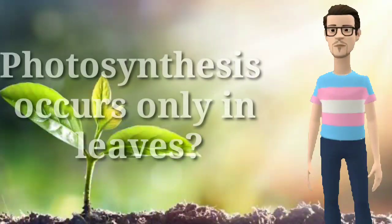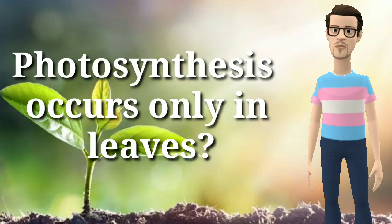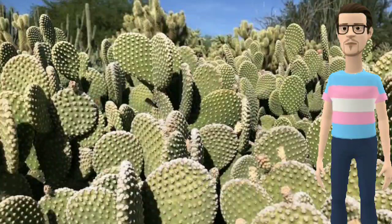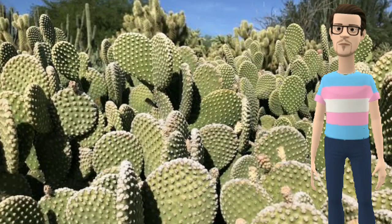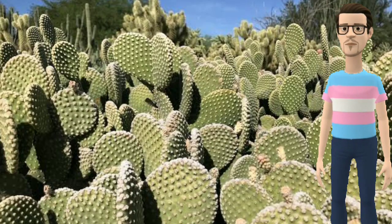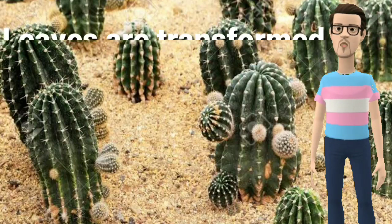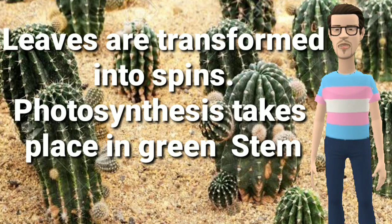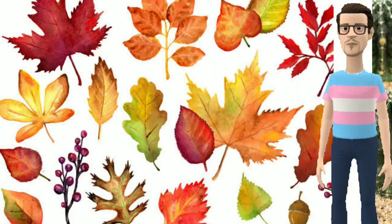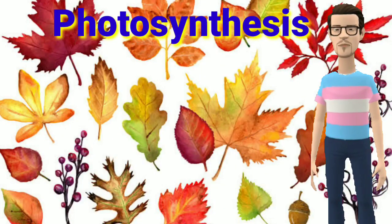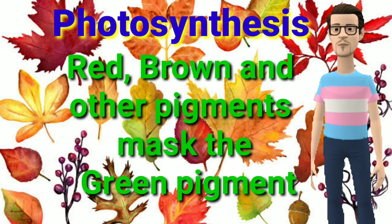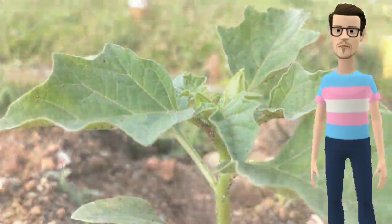Does photosynthesis take place only in leaves or in other parts of plants too? The answer is yes — even in green stems and green branches, photosynthesis takes place. Take the example of cactus, where the leaves are converted into spines, needle-like structures, so photosynthesis does not take place in the leaves but in the green stem. In gardens, you may have seen leaves of different colors — red, brown, and yellow. These colored pigments mask the green pigment, but the green chlorophyll is still there and photosynthesis takes place.